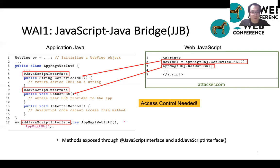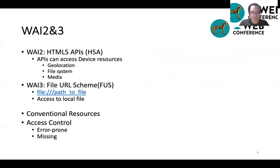Access control of the loaded web code is needed here. There are another two mechanisms also related to conventional resources, which are HTML5 APIs and file URL schemes. They allow accesses to conventional system resources, such as device geolocation, media stored on the device, or file system. The access control of them is either error-prone or just missing.